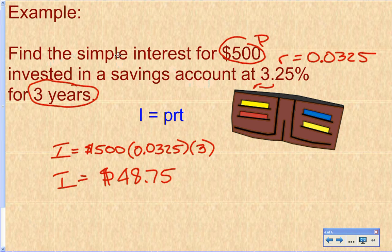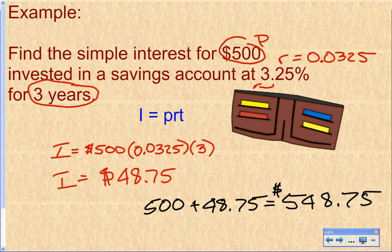Now, this question asks you to find the simple interest. What if they asked you how much money is in your bank account after three years? Remember, you put in 500, you earn $48.75 in interest. So in your bank account, you have the 500 plus the $48.75. So that means we have $548.75 after three years.